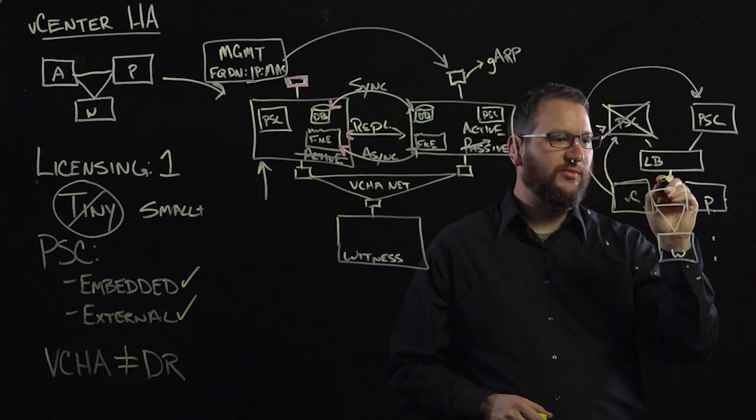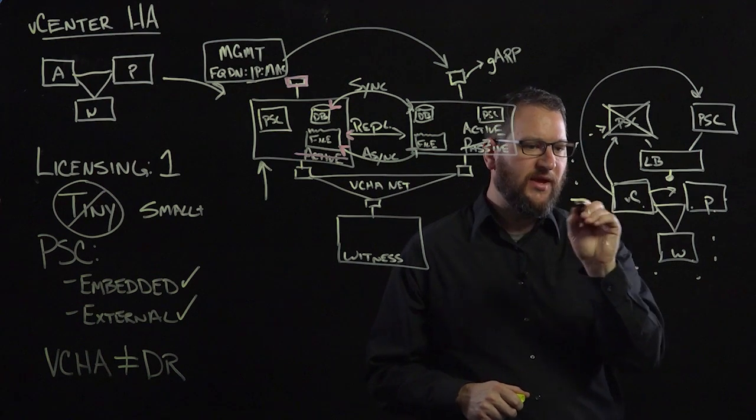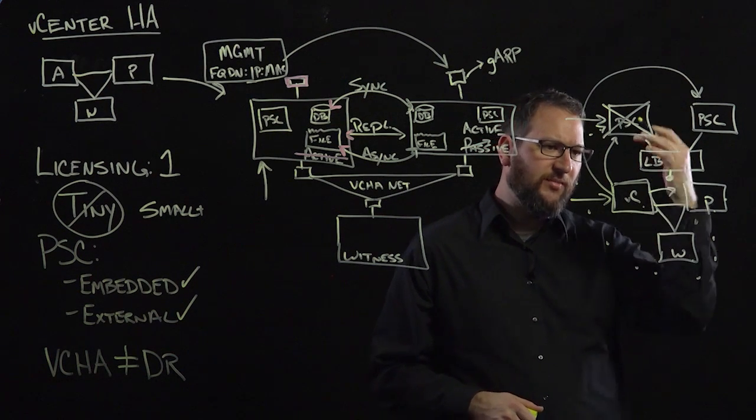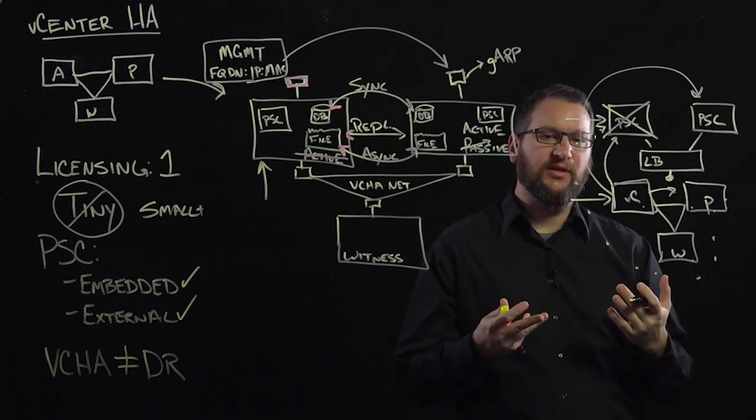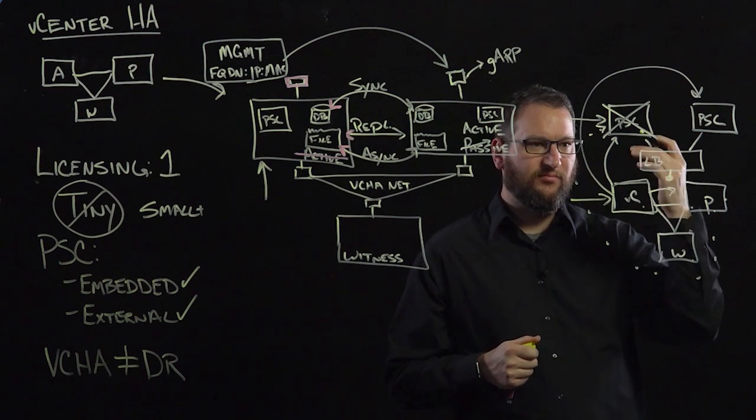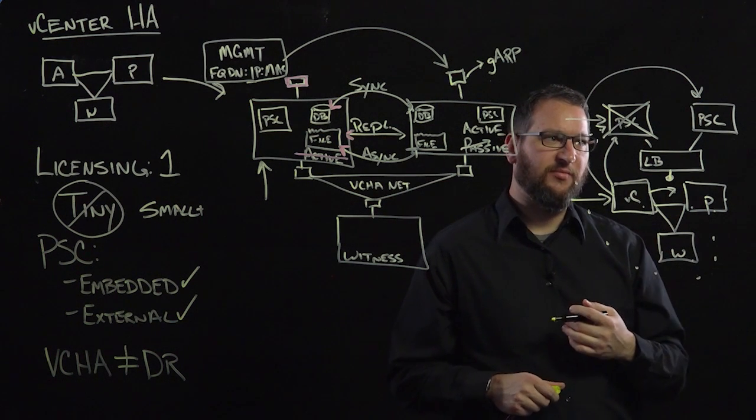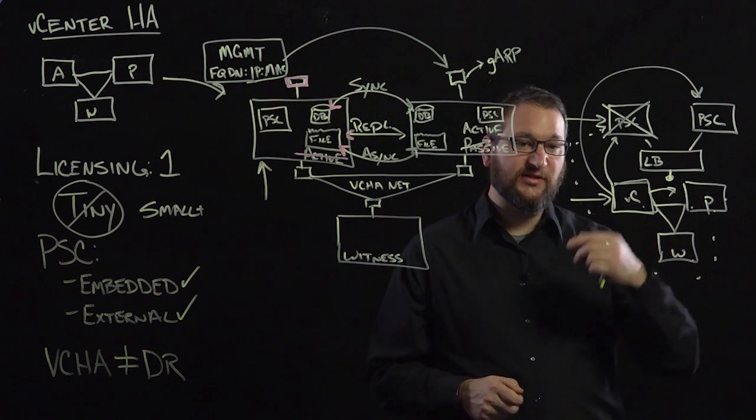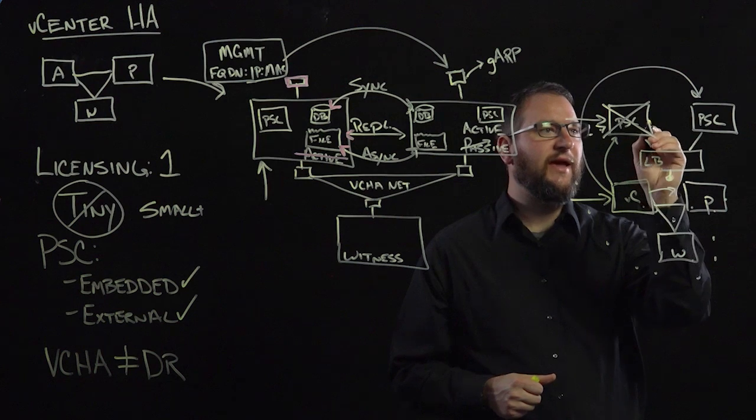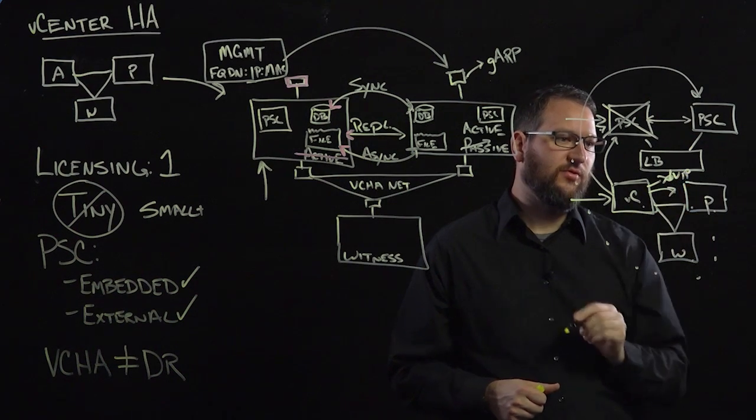So this is why the load balancer becomes very important when we're talking about high availability. One of the questions that I raise often is, why make the VCenter highly available, but not the platform services controller? If we can make both layers highly available, then we have a complete solution. Otherwise, we're providing a resiliency in VCenter HA, but then having to do some manual intervention, which contradicts the high availability principle if we were to have a PSC failure. So the ideal scenario is if we're using enhanced linked mode and thus using external PSCs in conjunction with VCenter HA, we need to have these two PSCs behind a load balancer with the VCenters pointed at this virtual IP or VIP on the load balancer.